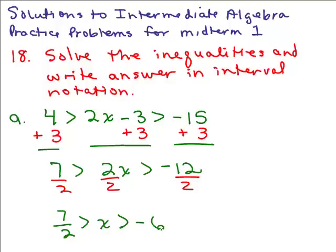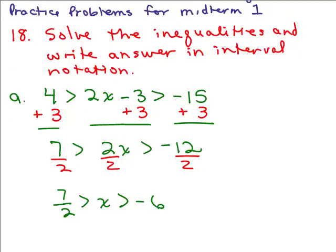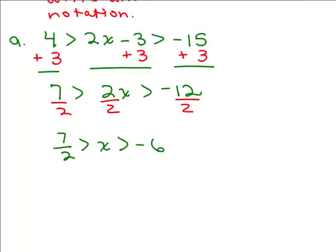Now when you're writing a compound inequality like that, you want to rewrite it so it has the smaller number on the left. So if 7 halves is bigger than x, which is bigger than negative 6, then that means negative 6 is smaller than x, which is less than 7 halves.